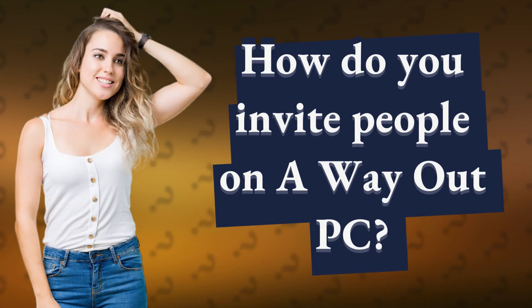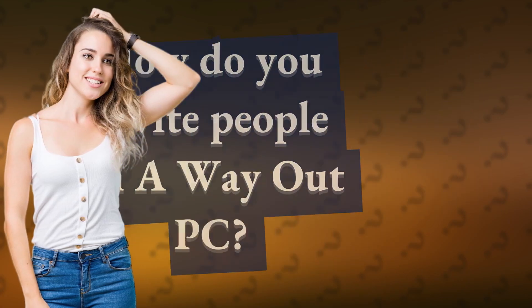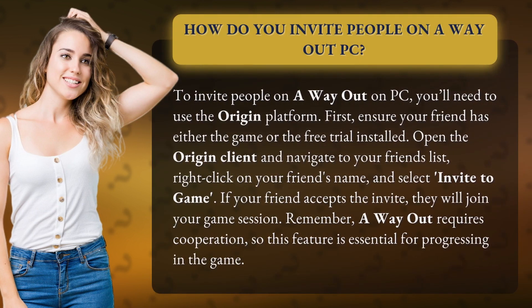To invite people on A Way Out on PC, you'll need to use the Origin platform. First, ensure your friend has either the game or the free trial installed. Open the Origin client and navigate to your friends list, right-click on your friend's name, and select Invite to Game.